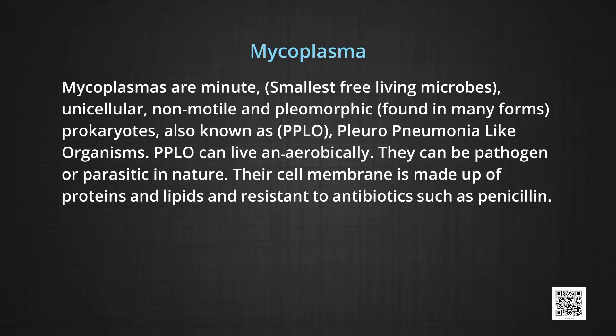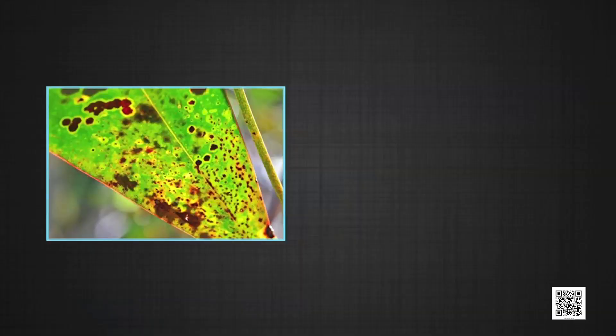Mycoplasmas are the smallest free-living microbes — minute, unicellular, non-motile and pleomorphic, meaning found in many forms. They are prokaryotes also known as PPLO — pleuro-pneumonia-like organisms. PPLO can live anaerobically and aerobically; they can be pathogenic or parasitic. Their cell membrane is made up of proteins and lipids and is resistant to antibiotics such as penicillin. They are saprophytes found in sewage water and dead and decaying organic matter. Some forms of mycoplasmas cause diseases in plants, animals and human beings.